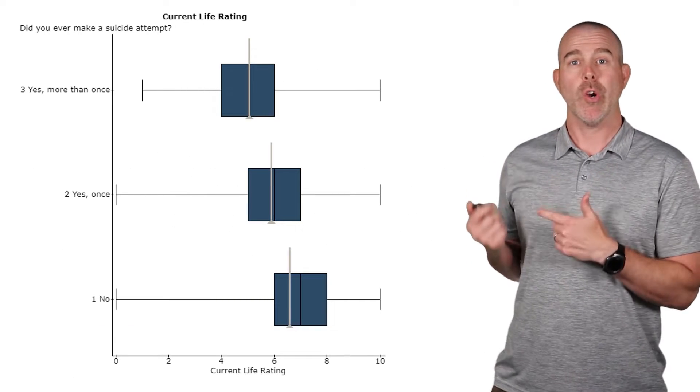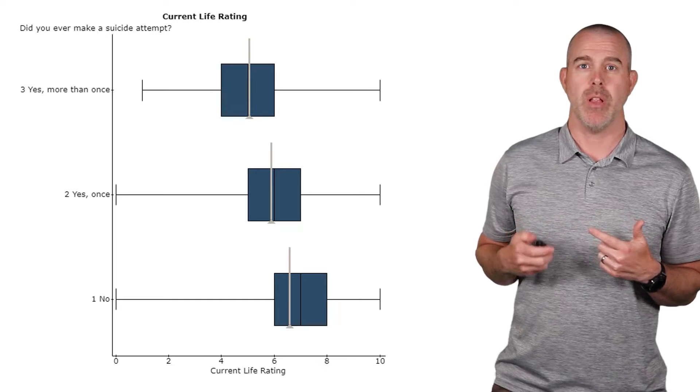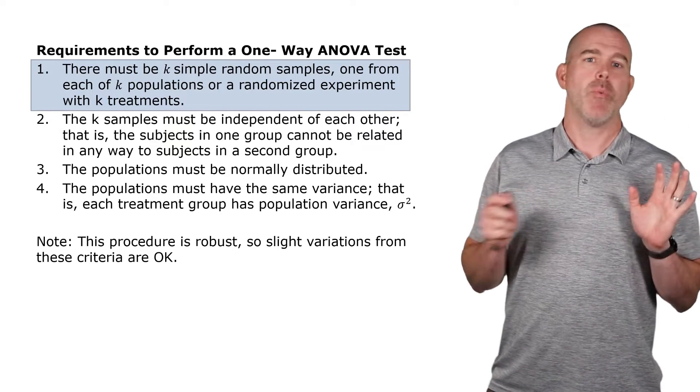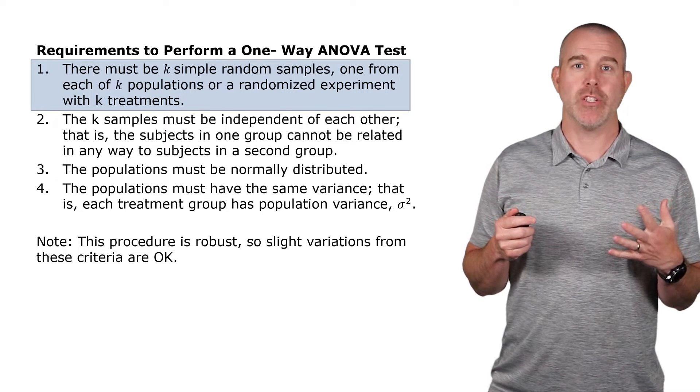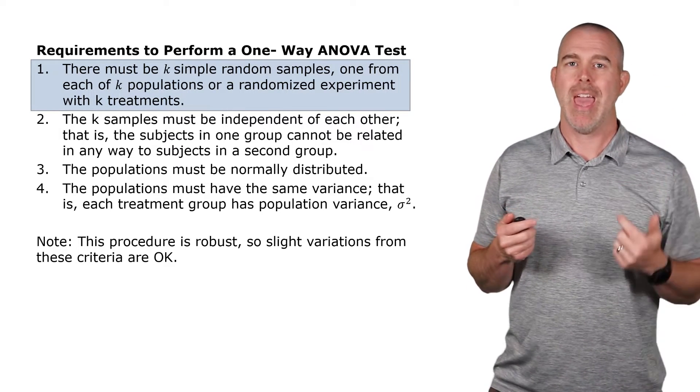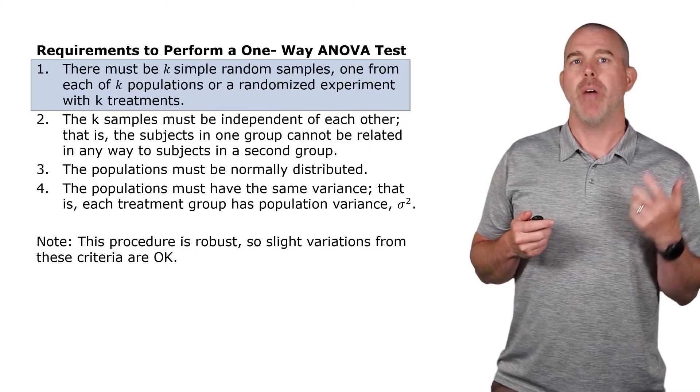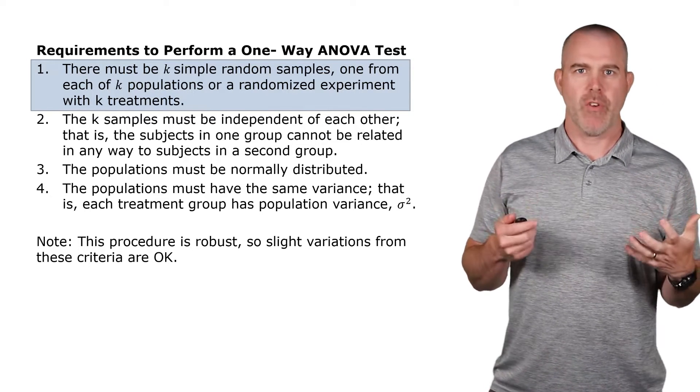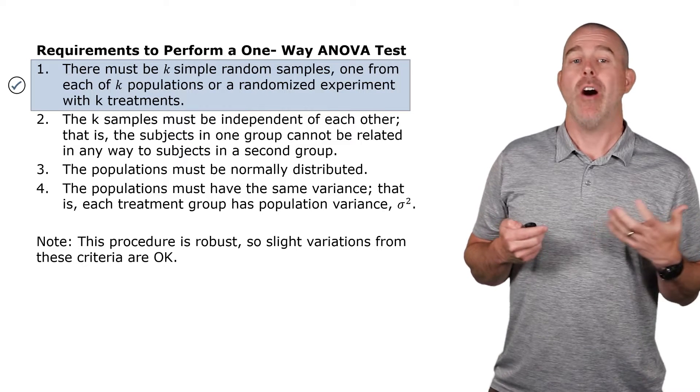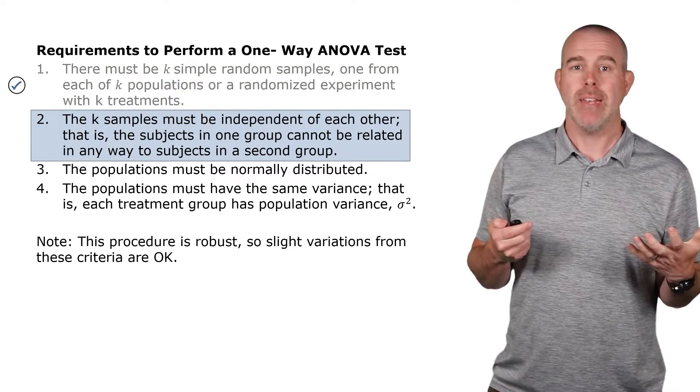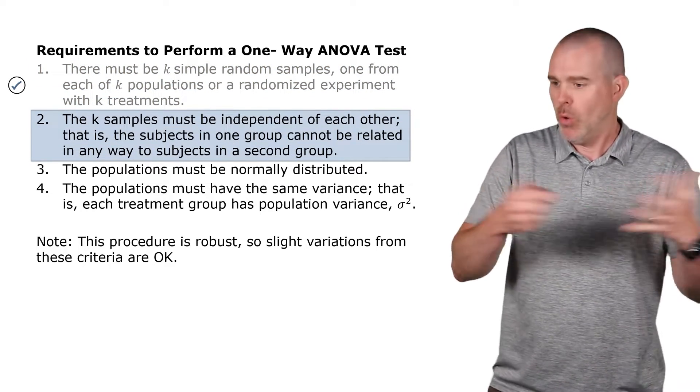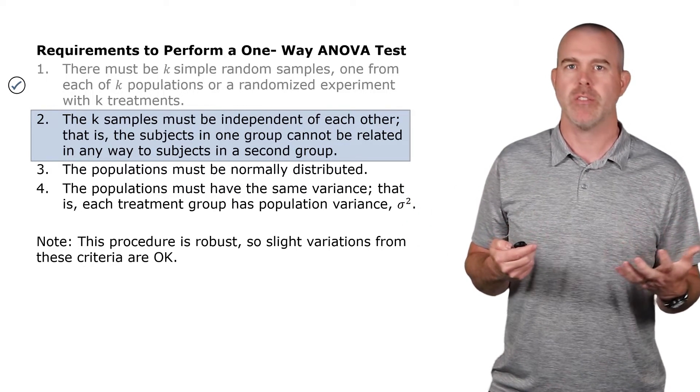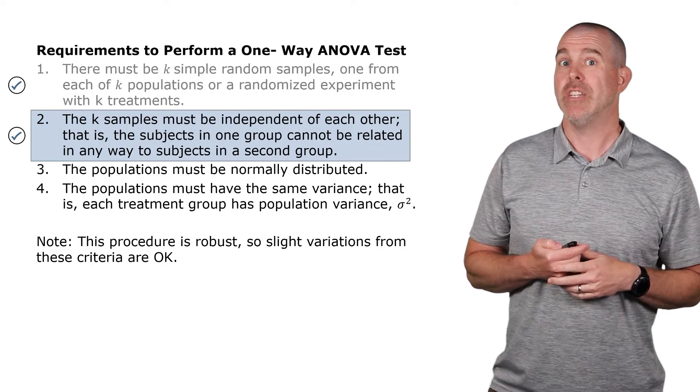Let's think about our current life rating example, and look at those four criteria. First of all, they're k simple random samples from k different populations. So each of those three populations, the yes more than once, yes once, and no, they're different populations. Second one, they have to be independent of each other. So they're totally different individuals. These individuals were randomly selected to participate in this survey. So that is definitely true.